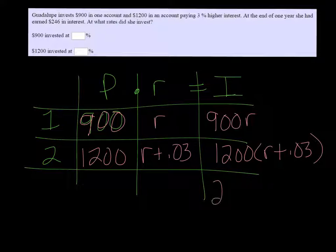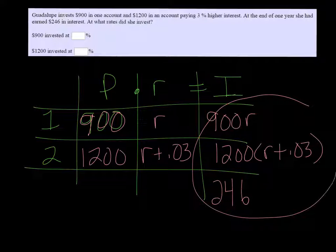And combined, she got $246. So that last column is going to give us our equation.